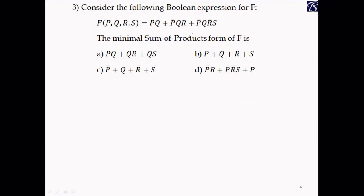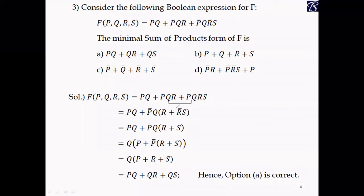Problem 3: An expression is given — F(p, q, r, s) = PQ + P̄QR + P̄QR̄S — with four variables. Observing the last two terms, the common factor is P̄Q. Taking that out, we get P̄Q(R + R̄S). Applying the formula A + Ā B = A + B, the redundant literal R̄ is removed, giving R + S.